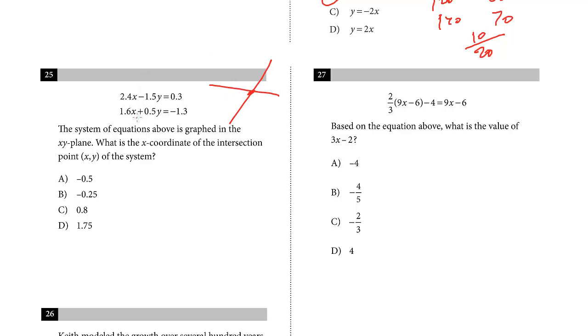Look to cancel out one of the variables. We're solving for X, so I'm going to look to cancel out the Y. Here's a negative 1.5Y, here's a positive 0.5. So what I'm going to do is, I'm just going to multiply this bottom equation by 3, right? Because that's going to get positive 1.5, we could just add it together and they cancel out. So I'm just multiplying the bottom equation.